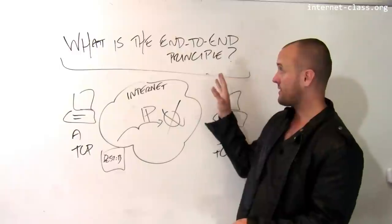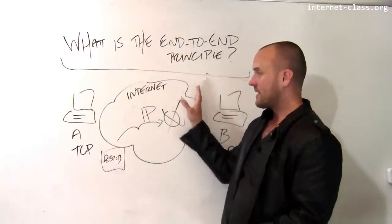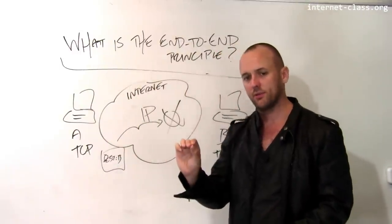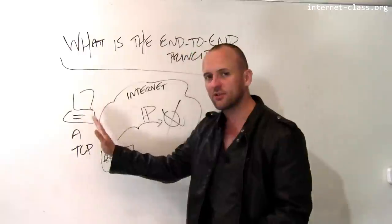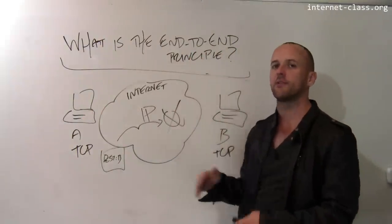So this is the design principle called the end-to-end principle, which means keep the core of the computer network as simple as possible. Push any additional functionality out to the endpoints whenever possible.